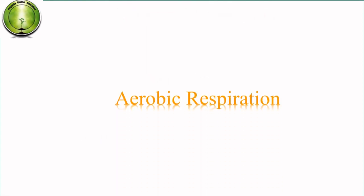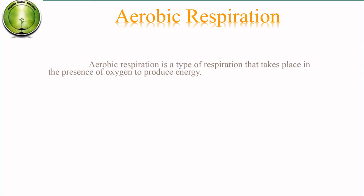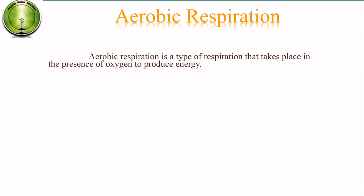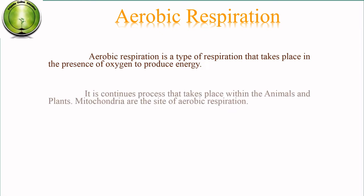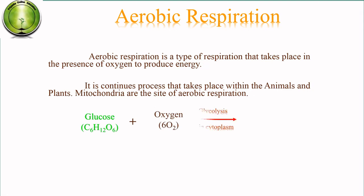Aerobic respiration is a type of respiration that takes place in the presence of oxygen to produce energy. It is a continuous process that takes place within the animals and plants. Mitochondria are the site of aerobic respiration. If the process of respiration occurs in the presence of oxygen, then it is aerobic respiration.